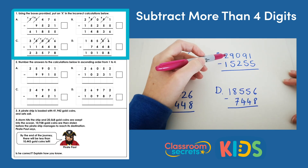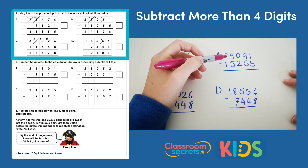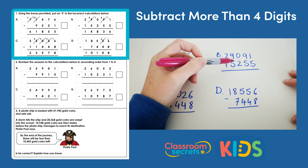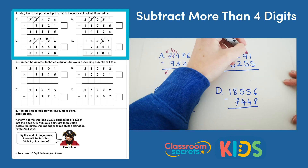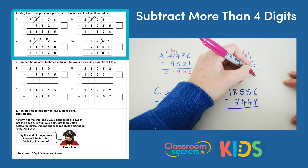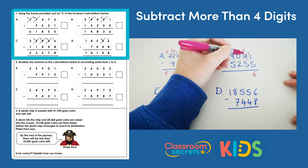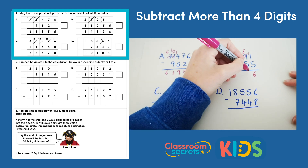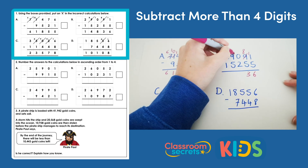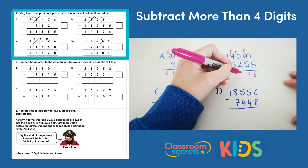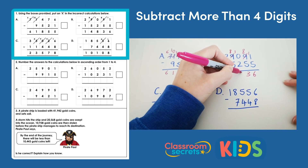B: 29,091 subtract 15,255. We can't do 1 subtract 5, so we need to perform an exchange, and then 11 take away 5 is 6. 8 subtract 5 is 3. 0 subtract 2 — we can't do, so we need to do an exchange, and then 10 subtract 2 is 8.